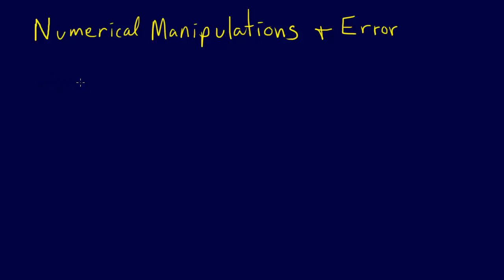All right. So now we've talked about how some of the problems can come in, some of the error that can be introduced through addition. Now let's talk about subtraction. By the time we've talked about everything, this is the biggest problem — the imprecision that comes into play because of subtractive operations. And this particular problem is lovingly called subtractive cancellation.